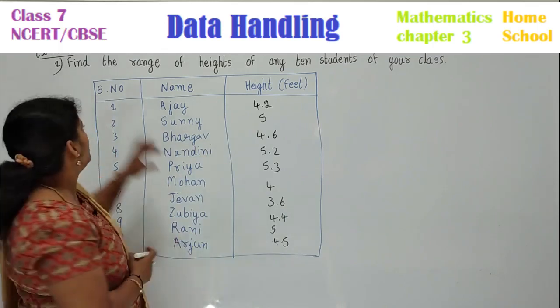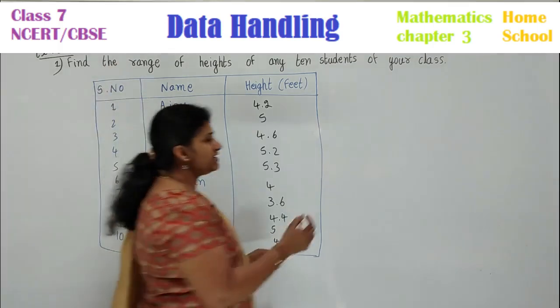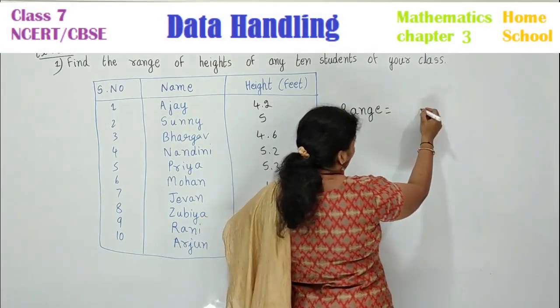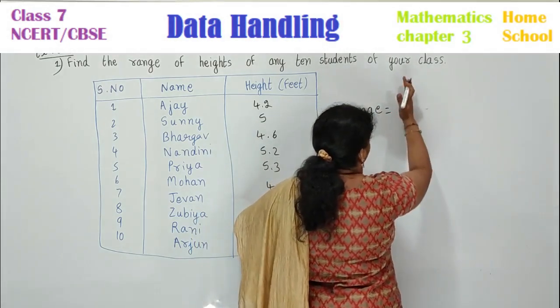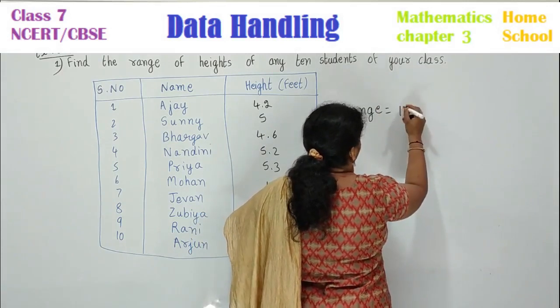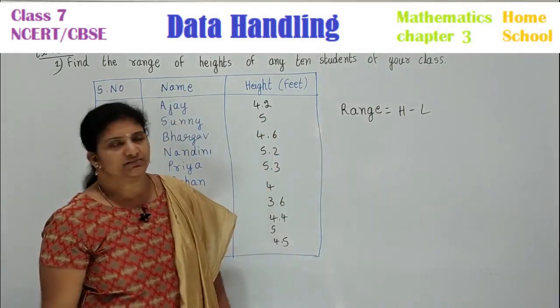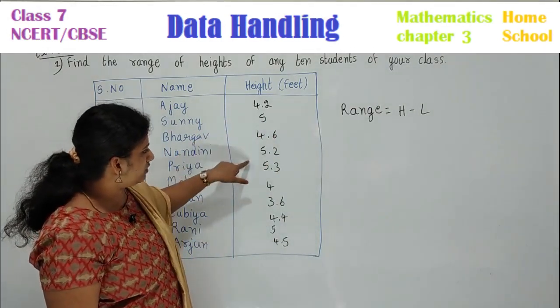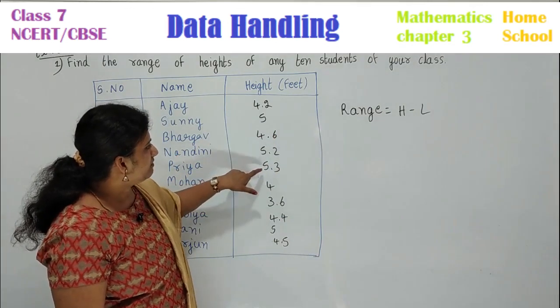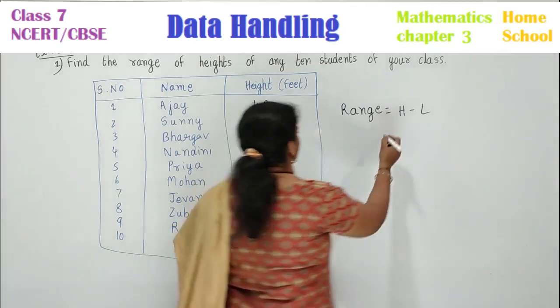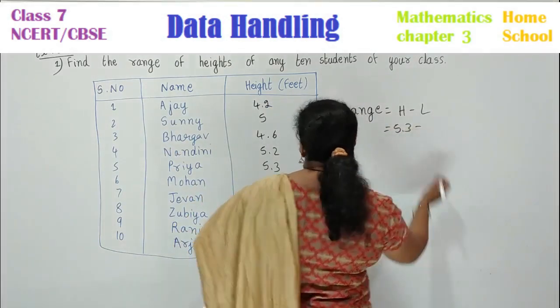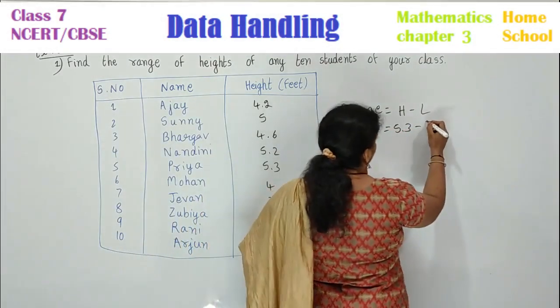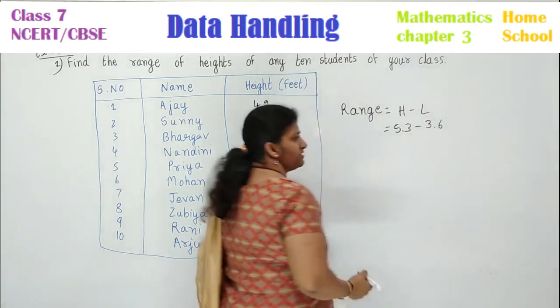Now, what is my question? Find the range. What is range children? What is the range formula? Range is nothing but the difference between high score minus low score, H minus L. In this, what is the high score? Observe here, which is the high score? 5.3 is the highest score. And lowest score? 3.6.